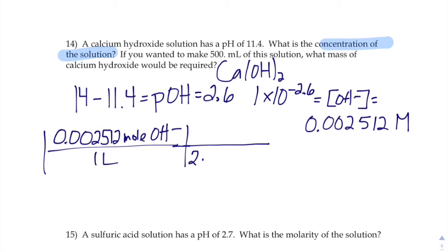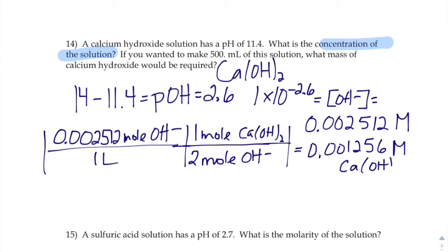There's two OHs inside every calcium hydroxide. So there's two moles of OH for every one mole of calcium hydroxide. So our calcium hydroxide concentration is going to be half of what the ion concentration is. So, like this. That's the molarity of our calcium hydroxide.